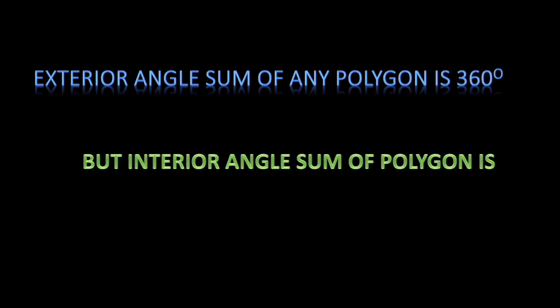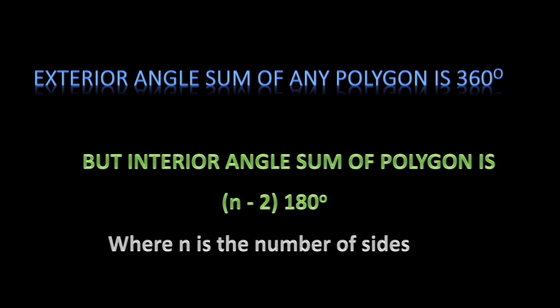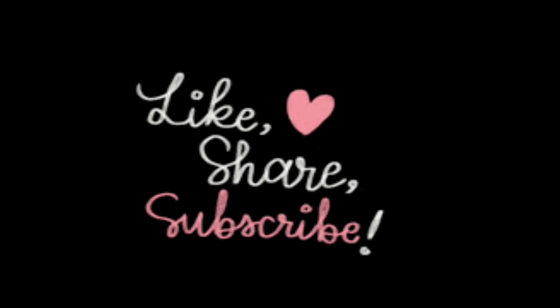To conclude: the interior angle sum of a polygon depends on the number of sides and is given by (n − 2) × 180 degrees, where n is the number of sides. Hope everyone understood. Thank you.